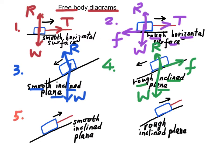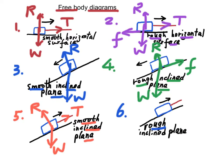For case five, a block is pulled by a string upward on a smooth inclined plane. The forces acting on the mass are the tension of the string, its weight, and the normal reaction. In case six, the block is pulled by a string upward along a rough inclined plane. The forces acting on mass M are the tension of the string, its weight, the normal reaction, and frictional force.